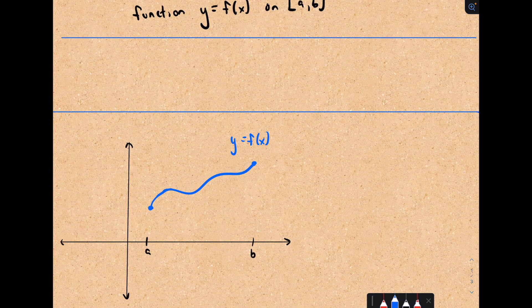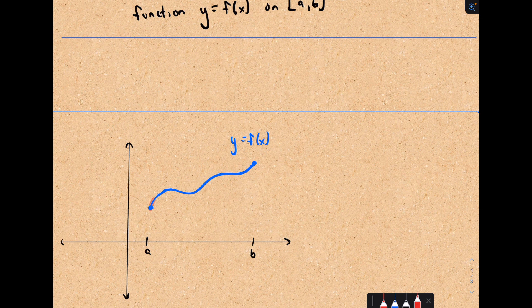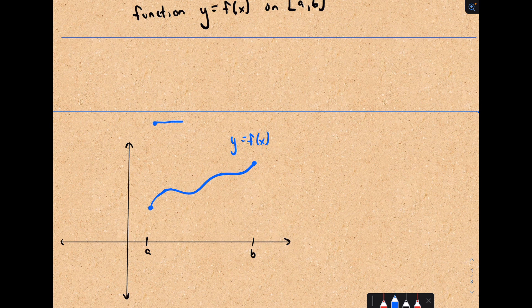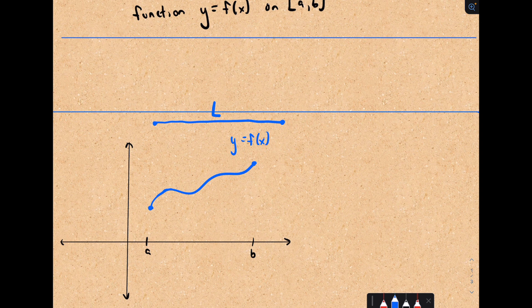Suppose I've got a function here, y equals f of x, on some closed interval a to b. I think the idea of arc length is easy enough. Imagine we could kind of lift this graph up, like a piece of string or something, pull it straight, and then we could simply measure it with a ruler. That would be the arc length.